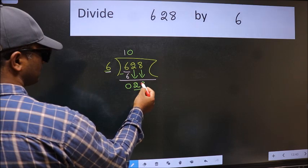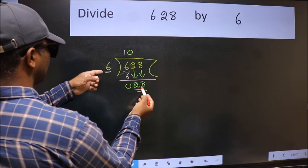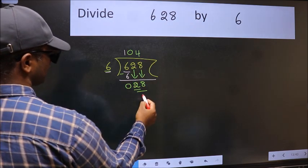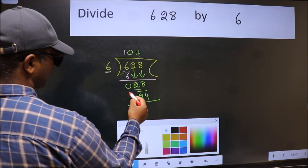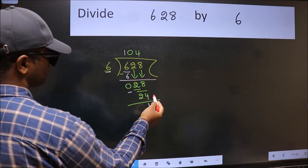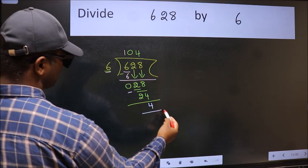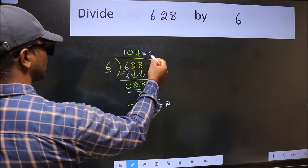Now we can bring this number down. Twenty-eight. A number close to 28 in the six table is six times four equals 24. Now we subtract; we get four. No more numbers to bring down, so we stop here. This is our remainder, and this is our quotient.